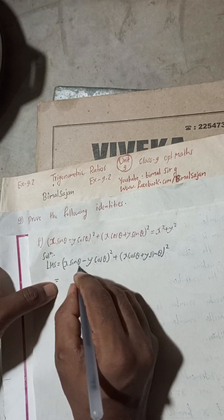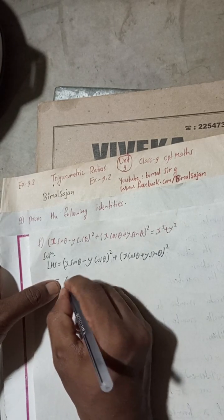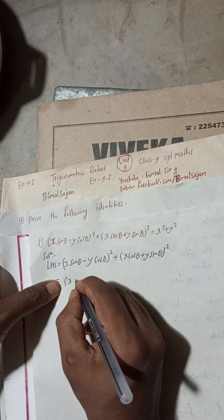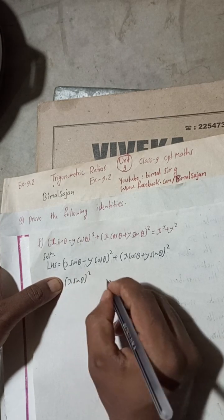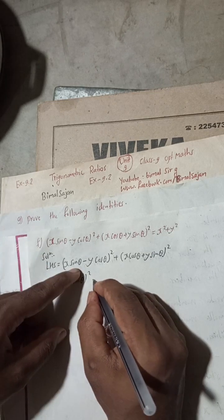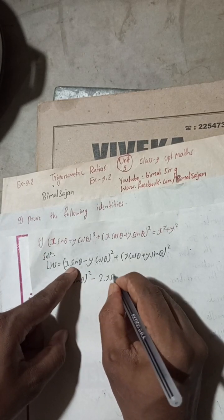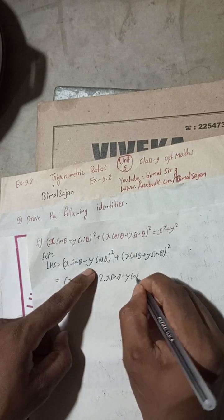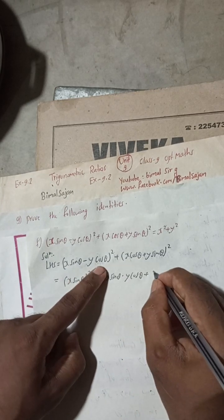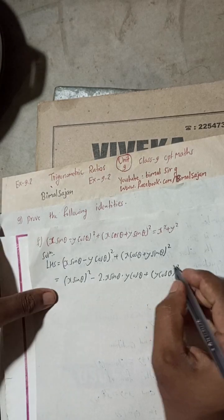The first part is a minus b whole square, so (a - b)² = a² - 2ab + b². Expanding: (x sinθ)² - 2·(x sinθ)(y cosθ) + (y cosθ)².